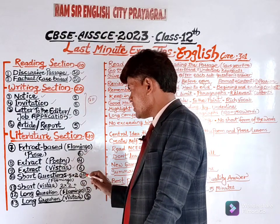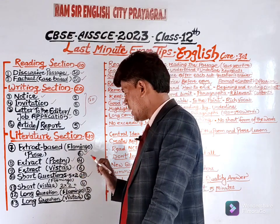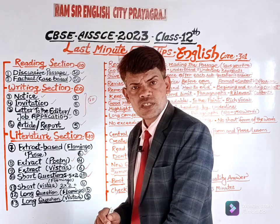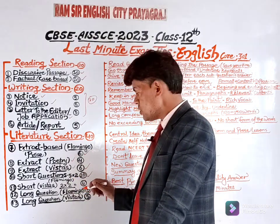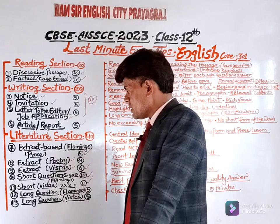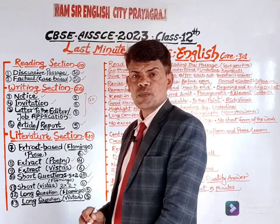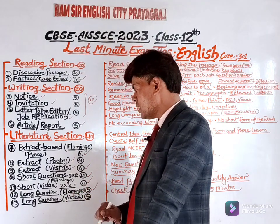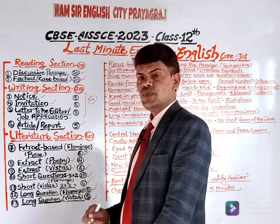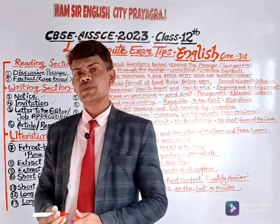Short answer type questions carry 5 questions at 2 marks each, totaling 10 marks. Short answer type questions from Vistas, the second book, are 2 into 2, which is 4 marks. Next are long answer type questions from your first book Flamingo, and long answer type questions from Vistas. This is the overall pattern of your question paper.